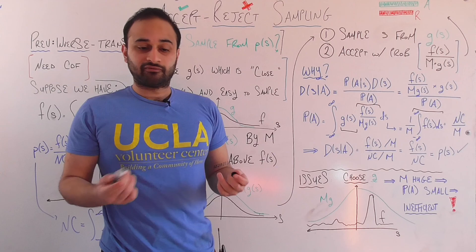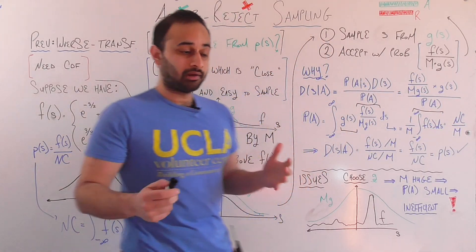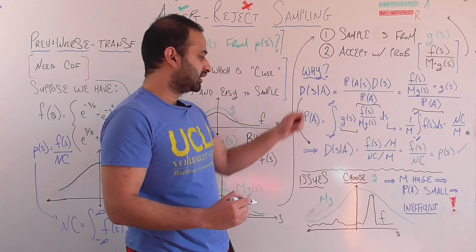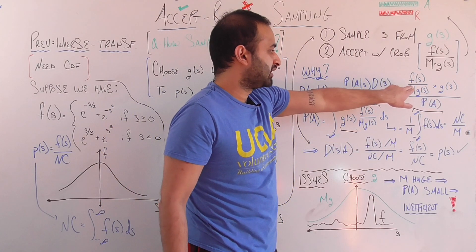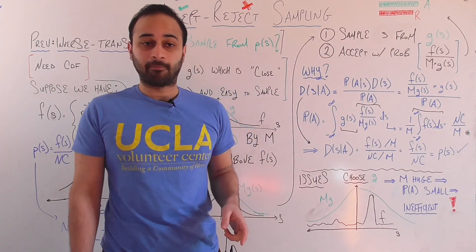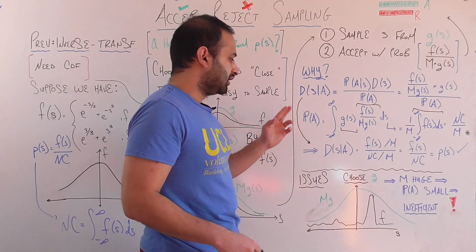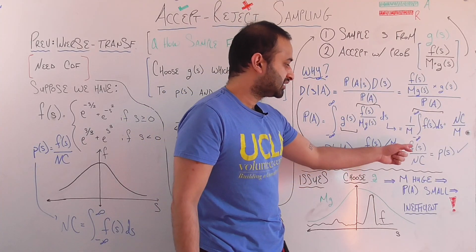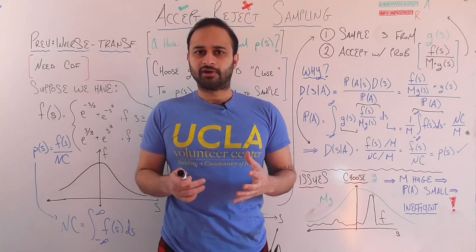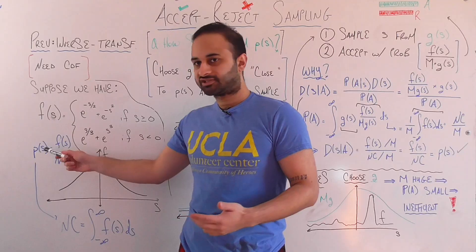So the probability of accepting a sample using this method is Nc divided by M. Now completing the formula: the density of S given accept equals — with G of S canceling in numerator and denominator — F of S divided by M in the numerator, over Nc divided by M in the denominator. The M's cancel out, and we get that the density of a sample given that we accepted it equals F of S divided by Nc, which is exactly P of S. We have just proved mathematically that by using this different distribution G and accepting with this probability, we are exactly sampling from P of S.